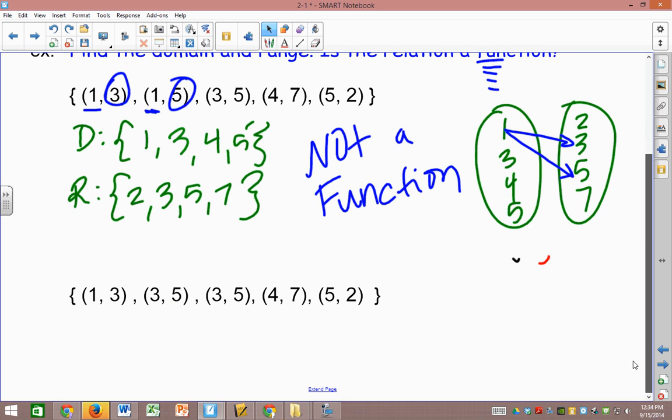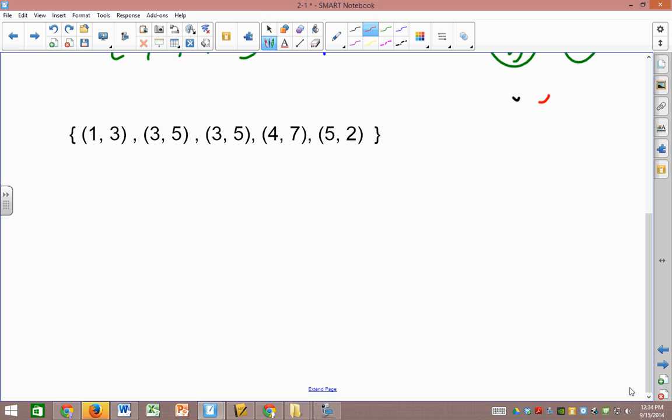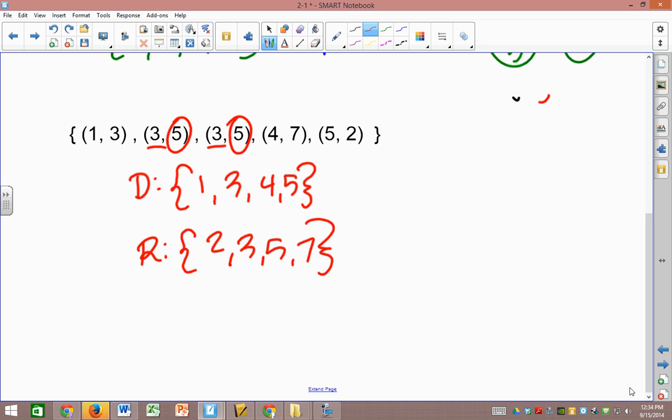All right. So here, coming up with the domain, what do you think? 1, 3, 4, 5. So just picking out the x-values. And then for the range? The lowest is a 2, then a 3, 5, 7. Is it a function? Well, I see two 3s in the x position, and they both have 5. So that's legal. So yes, it is a function.